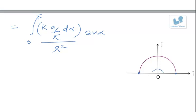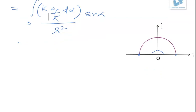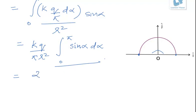Now you take the constants common: kq/(πr²) comes out, and we have integral of sin α dα with limit 0 to π. And if you solve this, this term comes out to be 2, so the answer is 2kq/(πr²).